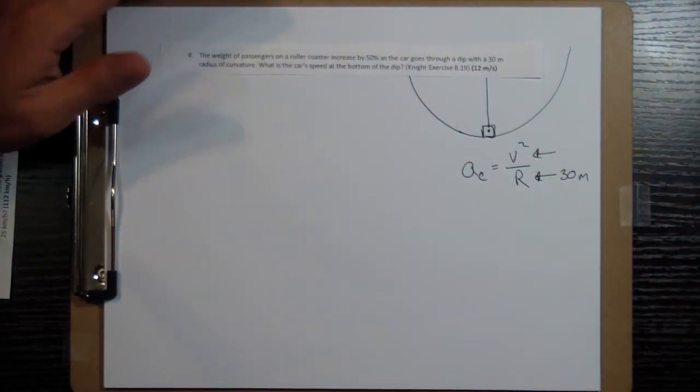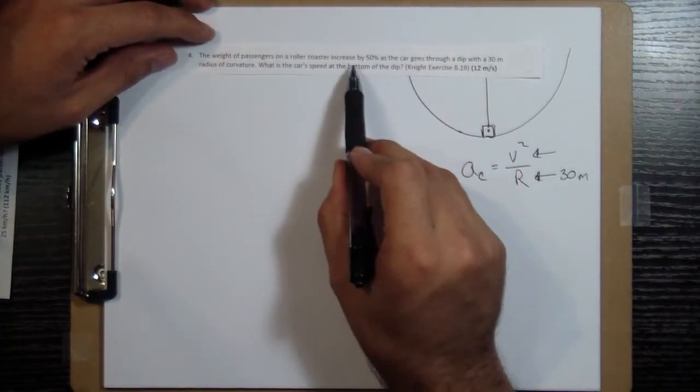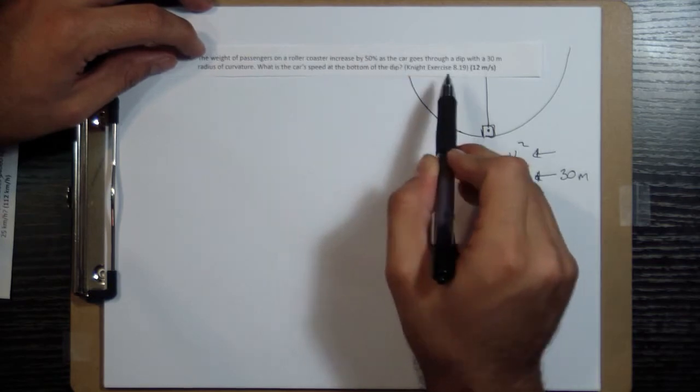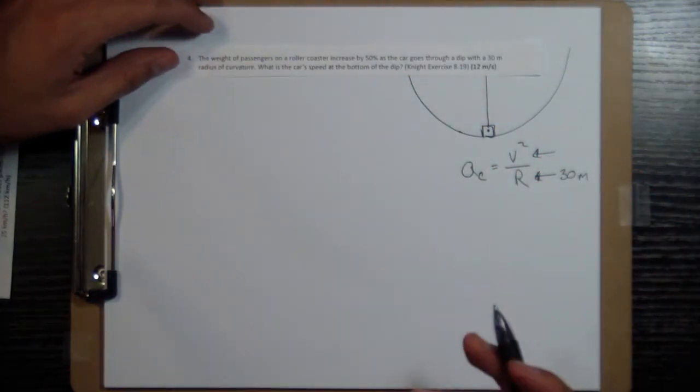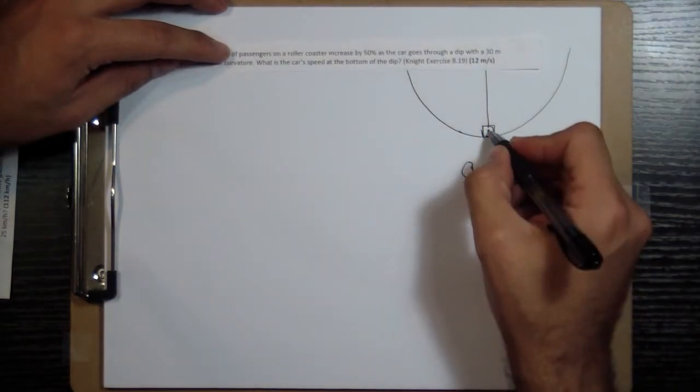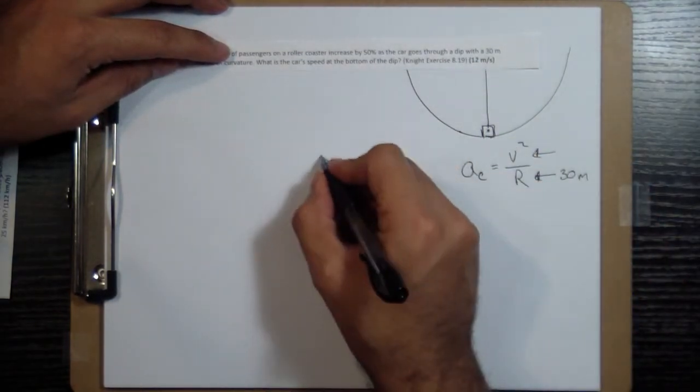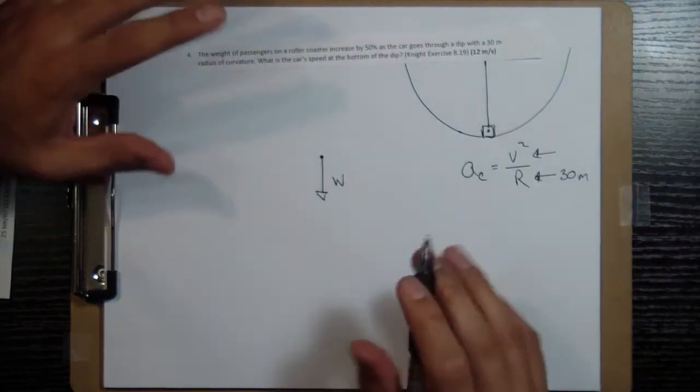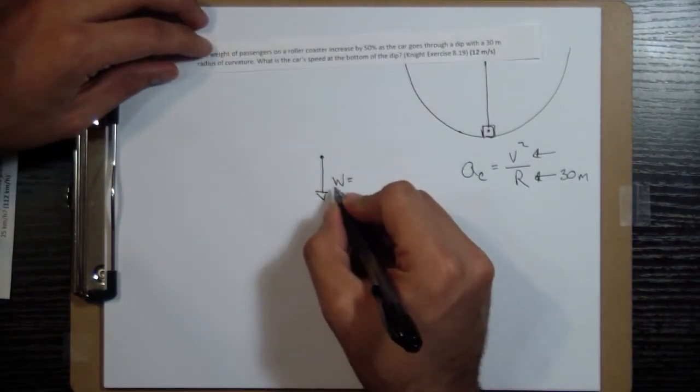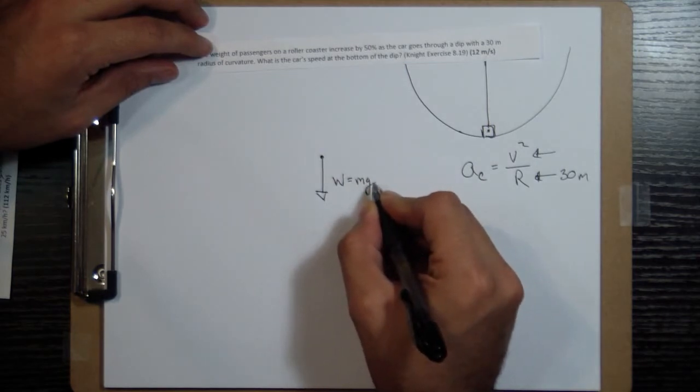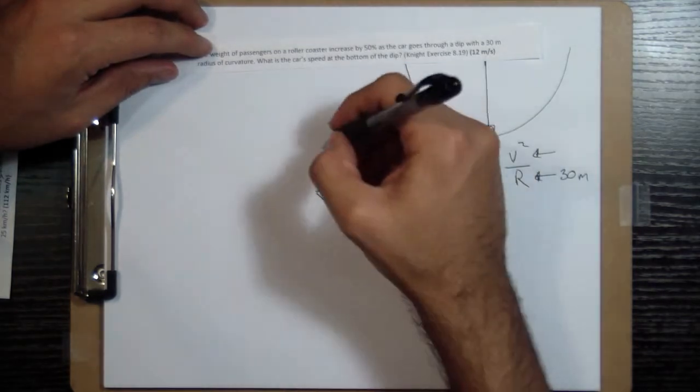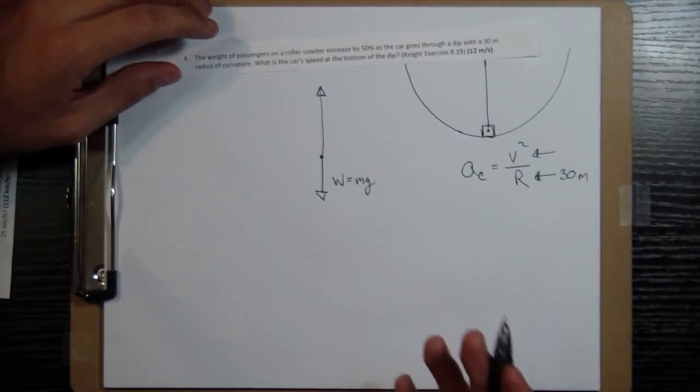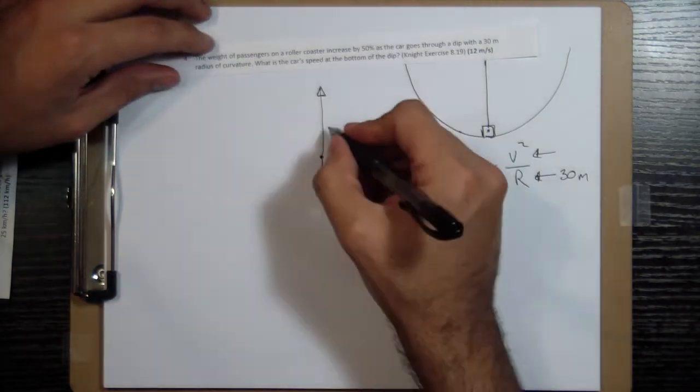So what we're given is that the weight increases by 50%. And what they mean here by weight is going to translate to the normal force. If you look at the free body diagram of this guy, of the car, there's going to be a force going down, which is a little bit confusing because usually we say that the weight is the force of gravity, which is the mass times the gravity.